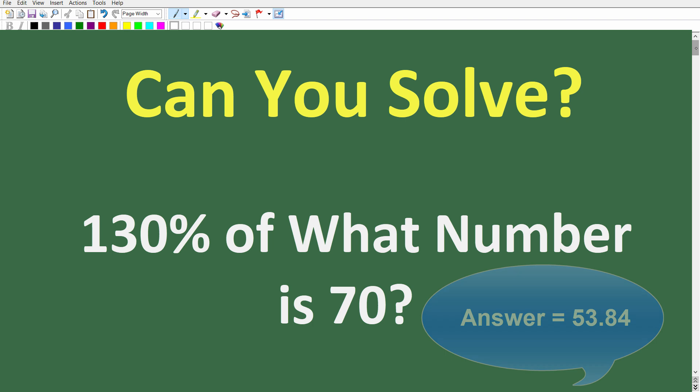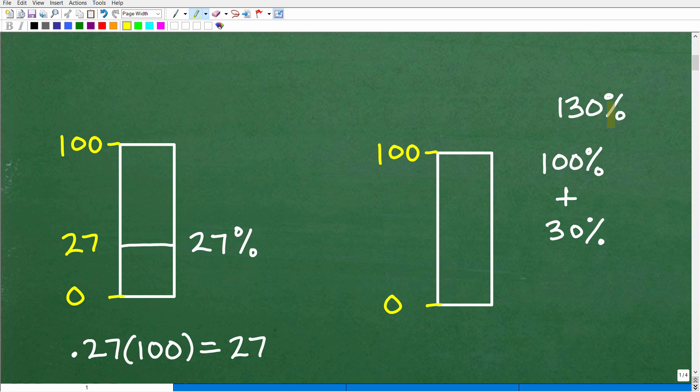But what's different about this problem is that we're dealing with a percent that's greater than 100. And I think conceptually this kind of messes up a lot of people, but let's just kind of quickly review this. So let's take a look at this little bar graph here, and let's go from 0 to 100.